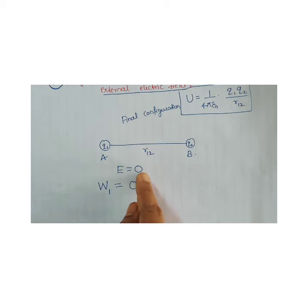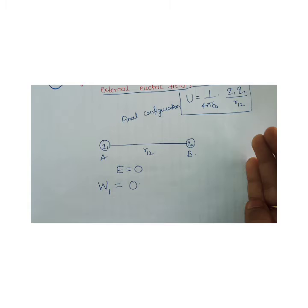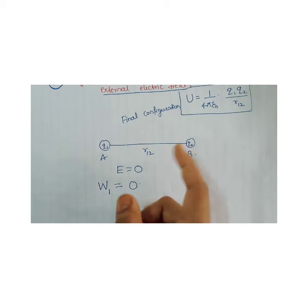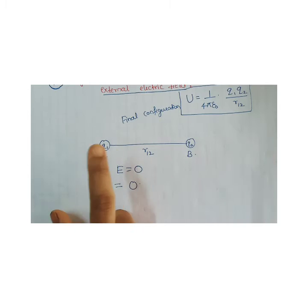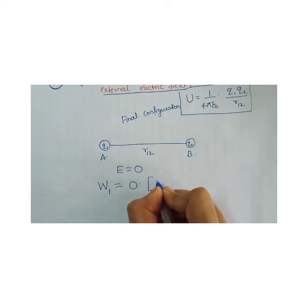From infinity you are bringing charge Q1 to position A. Since there is no electric field, you are not doing any work — work is not done. The reason is: electric field is zero means there is no force to oppose this charge coming over here. A slight push makes that charge come and sit at position A. That indicates no work is done in bringing charge Q1 from infinity to position A. So W1 = 0.